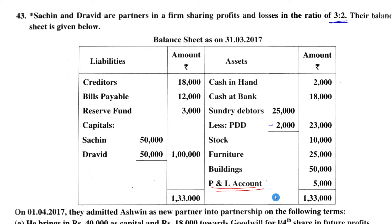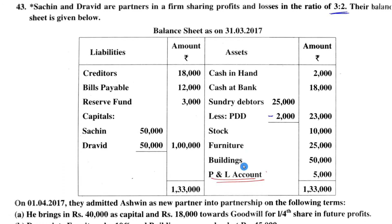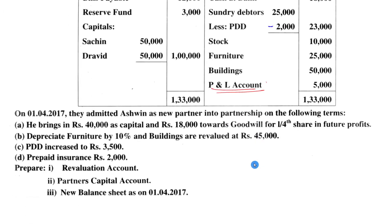Every company maintains a profit and loss account each year to check whether they made a profit or loss. This partnership firm has incurred a loss, that's why it's recorded on the asset side. If it were a profit, it would appear on the liability side because it belongs to the partners. Since it's a loss of 5,000 rupees recorded on the asset side, we need to subtract it.